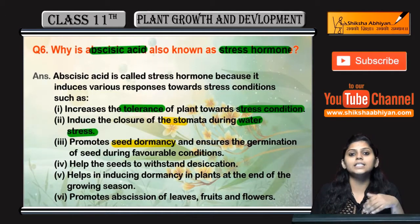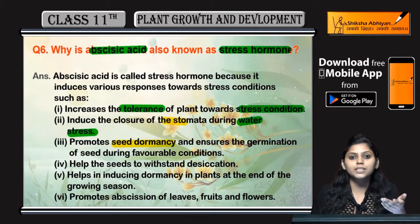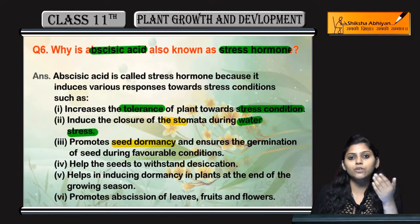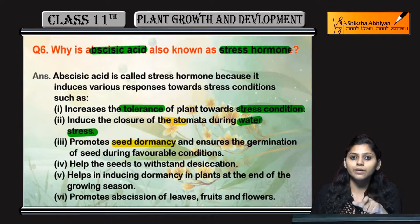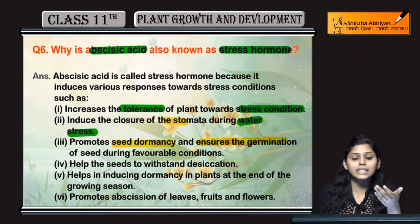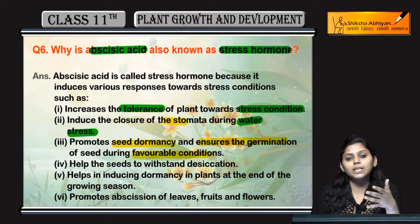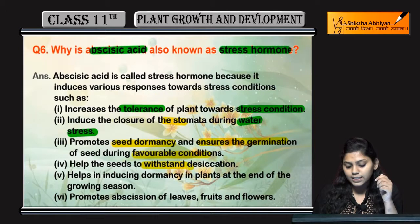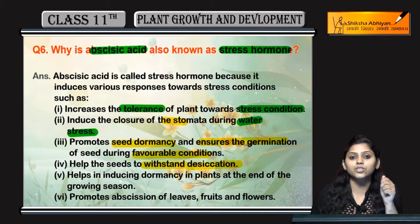Promote करता है seed dormancy. Dormancy क्या होता है? Plant की growth या फिर germination of seed यह सब रुक जाती है, उसे बोलते हैं dormancy. तो seed dormancy promote करता है. Ensure करता है germination of seeds during favorable condition — favorable condition में germination हो सकती है seeds की.